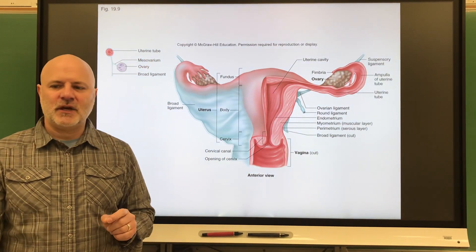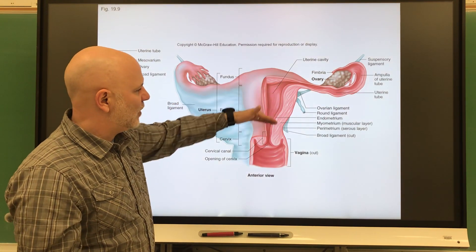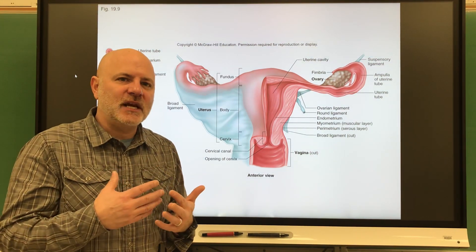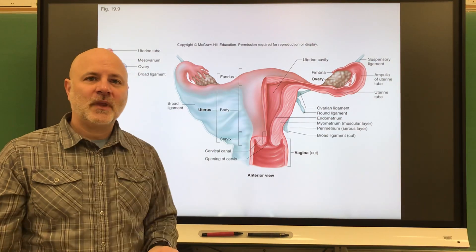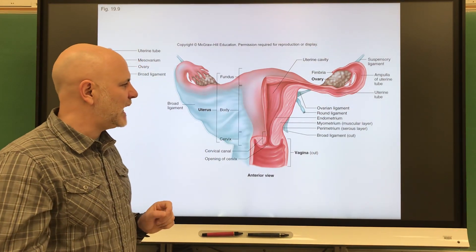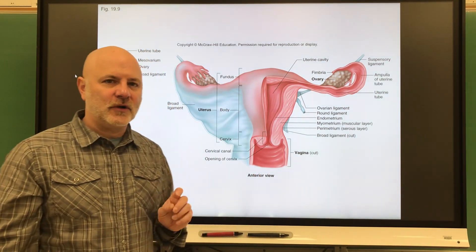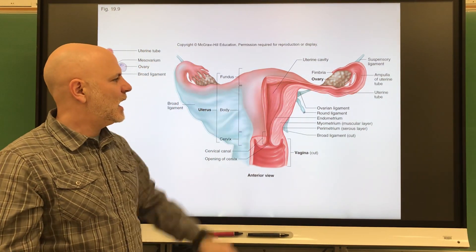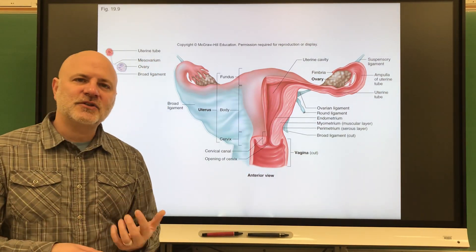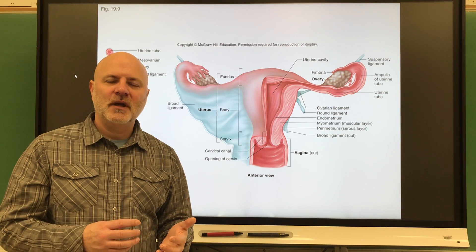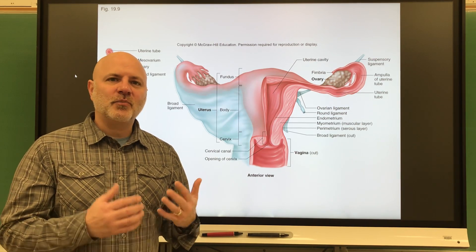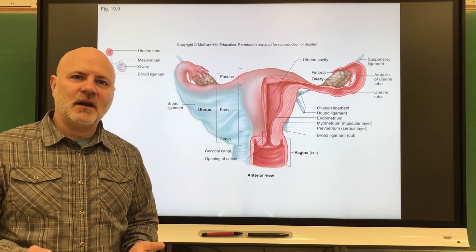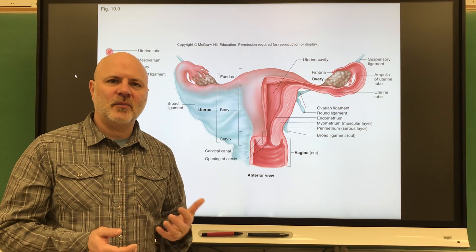If there is no fertilization, the endometrium will be shed — and that's what the menstrual flow is. The endometrium builds up for implantation; if there's no implantation, you shed it. If there is implantation, the embryo implants about a week after fertilization, having traveled from the fallopian tubes into the uterus. Once it implants, it secretes a hormone called human chorionic gonadotropin, or HCG, which prevents menstruation — and thus prevents shedding of the endometrium and loss of the pregnancy. HCG is also what is detected in a pregnancy test.